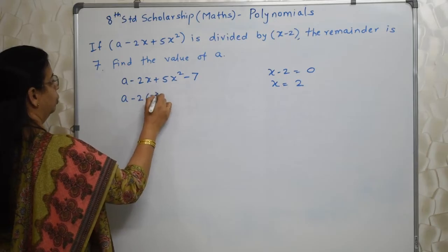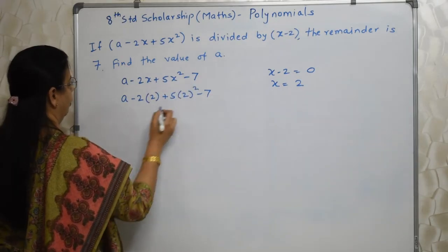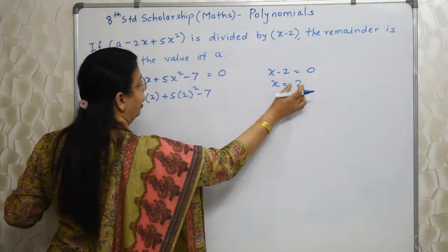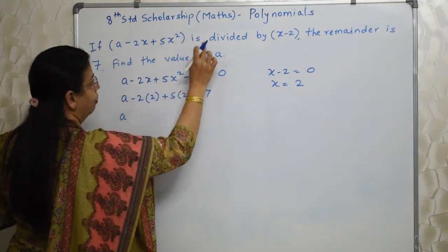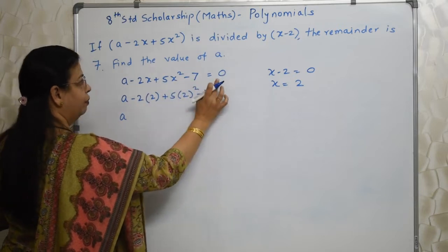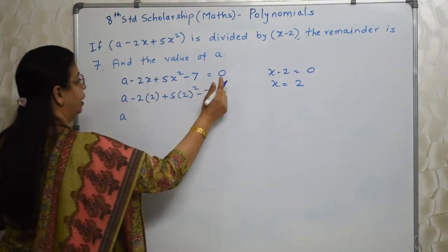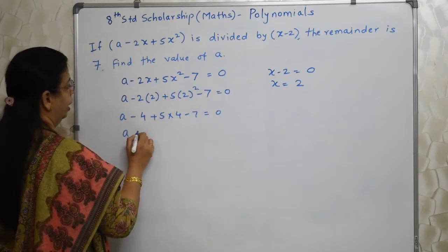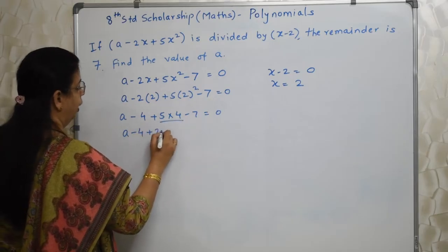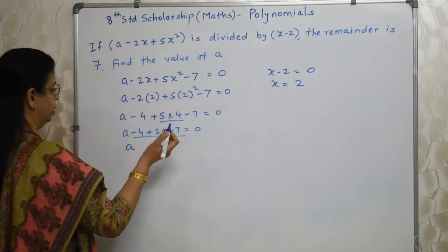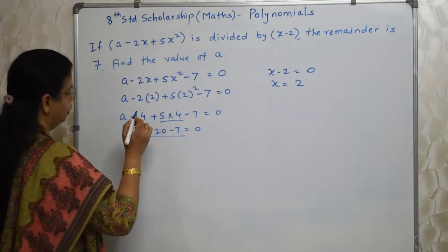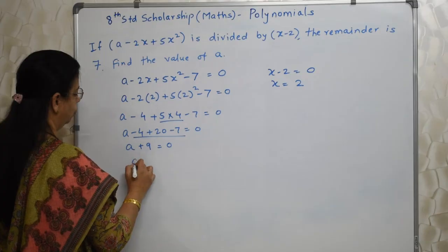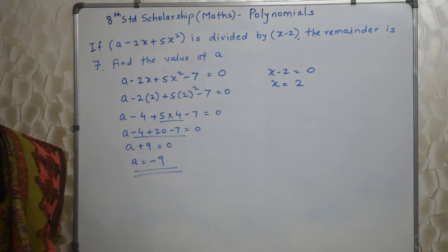Now substitute x equals 2: a minus 2 times 2 plus 5 times 2 squared minus 7 equals 0. This gives: a minus 4 plus 5 into 4 minus 7 equals 0. By BODMAS: a minus 4 plus 20 minus 7 equals 0. So a plus 16 minus 7 equals 0, which gives a plus 9 equals 0. Therefore a is equal to minus 9. A equals minus 9 is the answer.